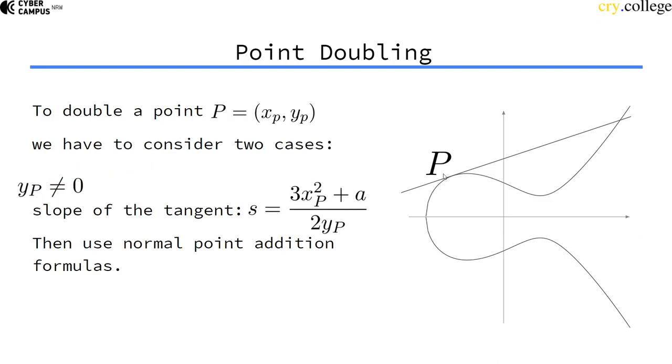So in order to do that, we need the tangent of this line at the point p. We can compute the slope of this tangent with this formula and then use the normal point addition formulas for finding this point and then inverting it and then having the point doubling result.